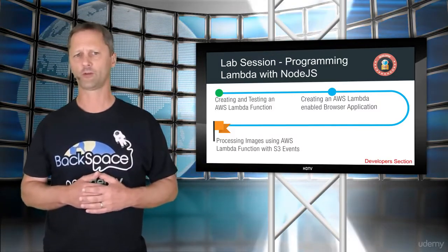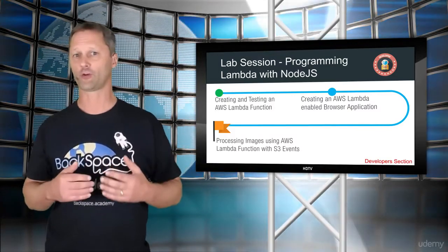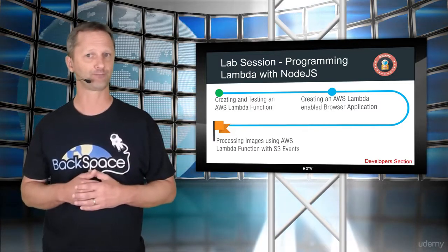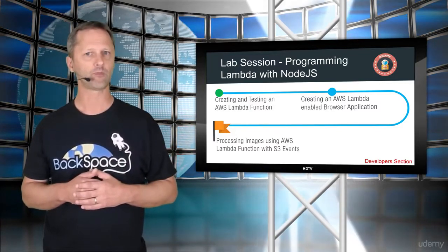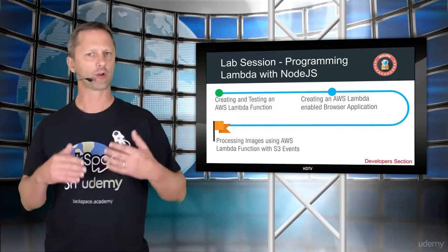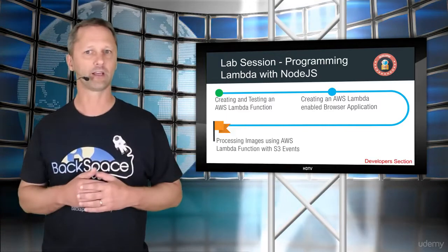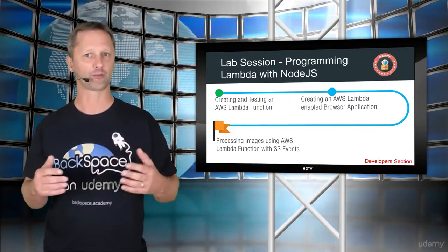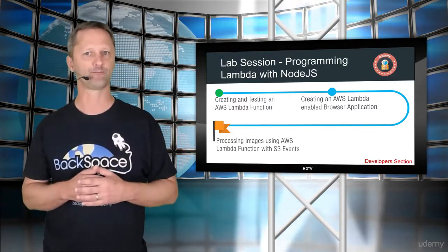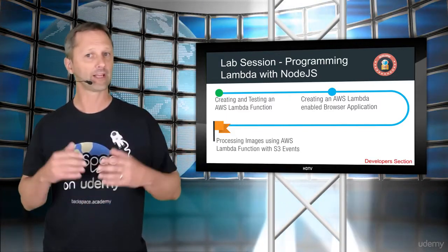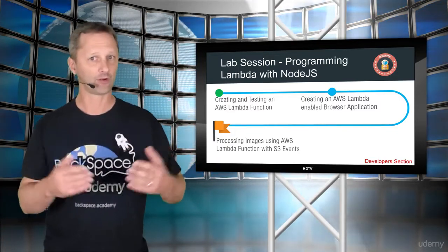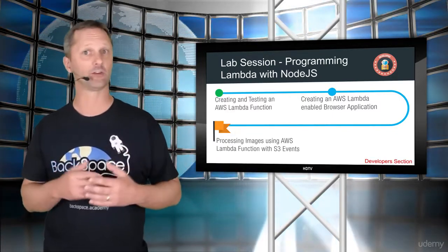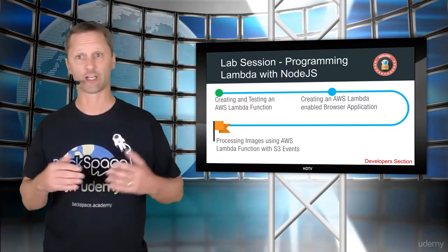The first thing we're going to do is create and test an AWS Lambda function. Then we're going to create an AWS Lambda-enabled browser application, and that's going to allow us to upload images to Amazon S3.